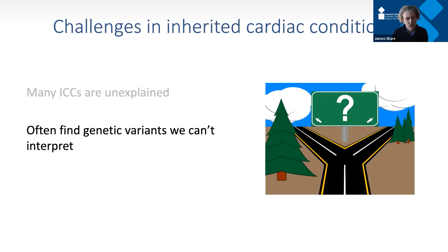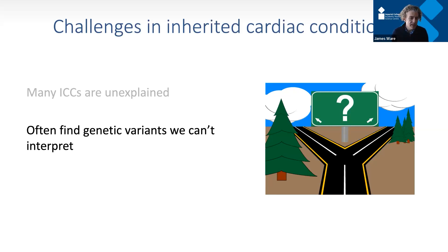A second challenge is that we often do find something but don't know what it means. There are millions of DNA differences between the genomes of two people, and each of us has thousands of DNA changes that are rare — found perhaps only in your family or a few other families around the world. A testing lab won't have seen them before and can't know for sure what they mean. The question is: is this variant responsible for the cardiomyopathy or not?